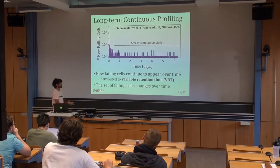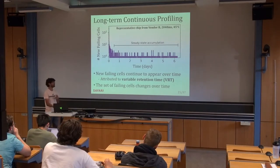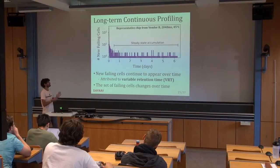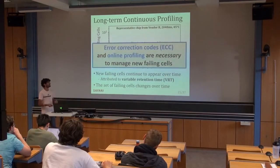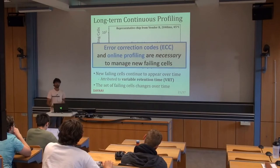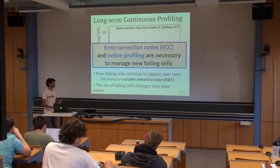The set of failing cells we need to deal with is changing over time, and it's not good enough to just do one round of profiling. We draw two major conclusions: first, error correction codes are necessary, and second, online profiling is necessary because the set of failures keeps changing over time.